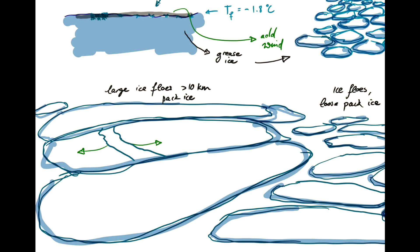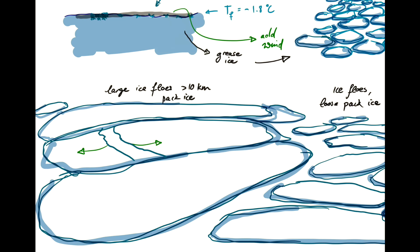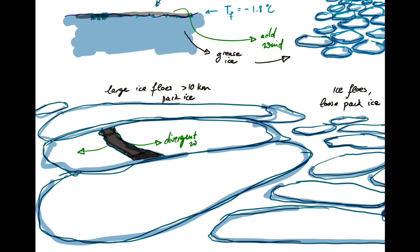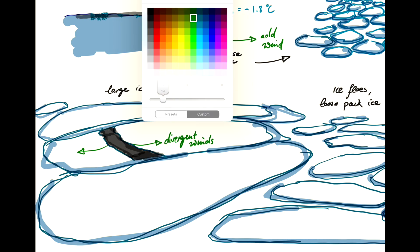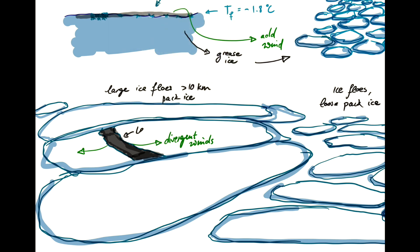And you're exposing the dark waters underneath. So if you have divergent winds, then you can create these cracks. And these cracks are called leads. This is a lead.